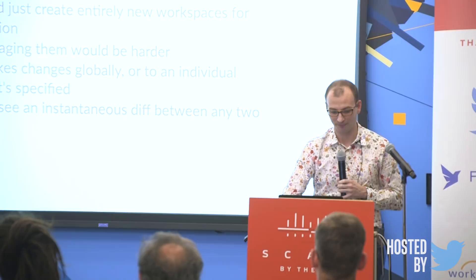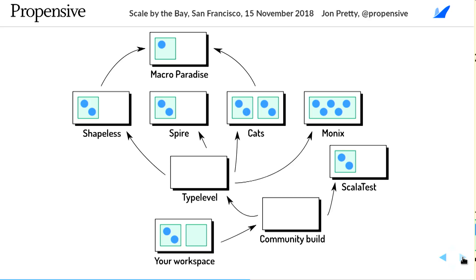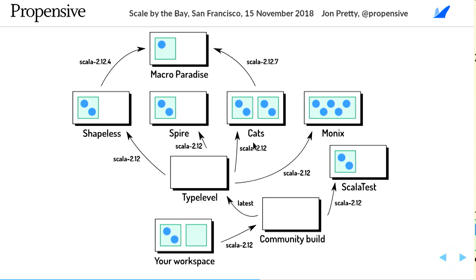Let's look at the hypothetical workspace graph again — I didn't give you the complete story before. When you inherit from another workspace, you inherit from a particular schema in that workspace. Schema names can be anything you like, but a typically good name would be 'Scala212' if it's compiling for Scala 2.12. The Type Level workspace depends on the Scala 2.12 schema in each of Shapeless, Spire, and Cats. Macro Paradise, maintaining versions for every different minor version, might have a dependency named 'Scala212_7'.